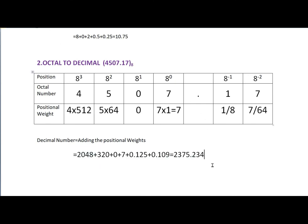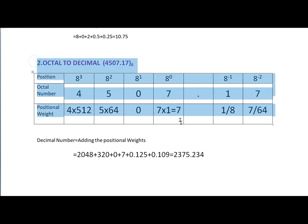So the key point is: we add all the positional weights, and whatever number system conversion we perform, we put the powers of that particular radix as the positions.